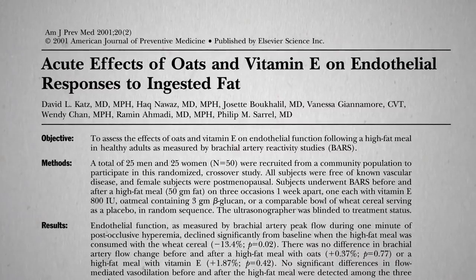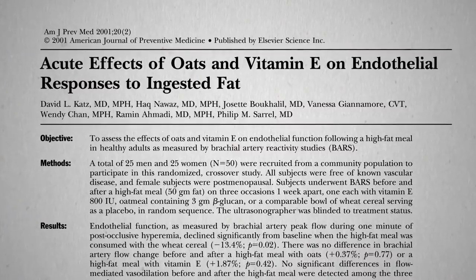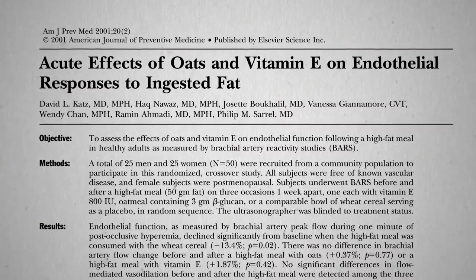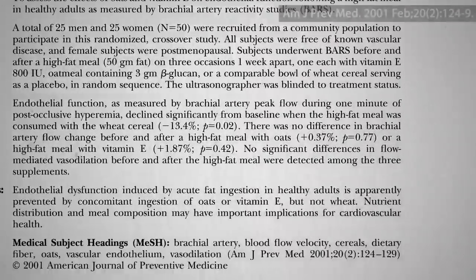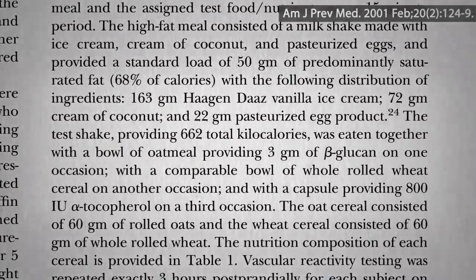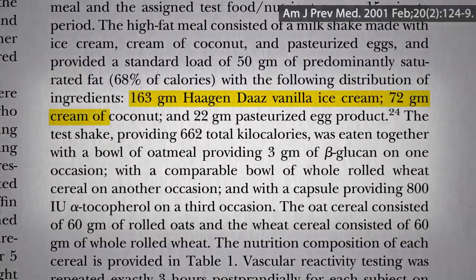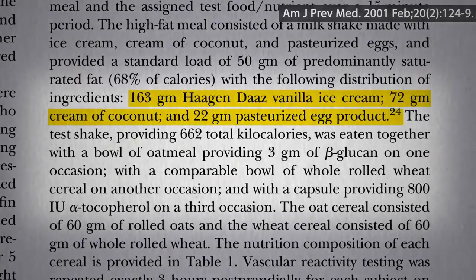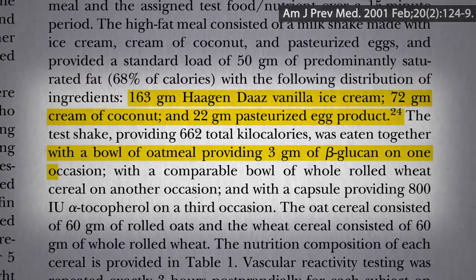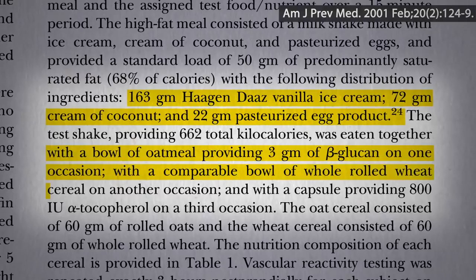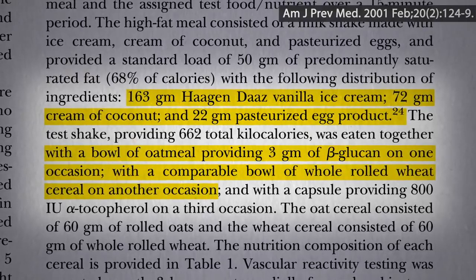What about oatmeal instead, or whole wheat? Well, first they needed to design an artery-crippling meal, high in saturated fat. They went with a Haagen-Dazs coconut cream and egg milkshake, with or without a bowl of oatmeal. Or, instead of rolled oats, whole rolled wheat. What do you think happened?